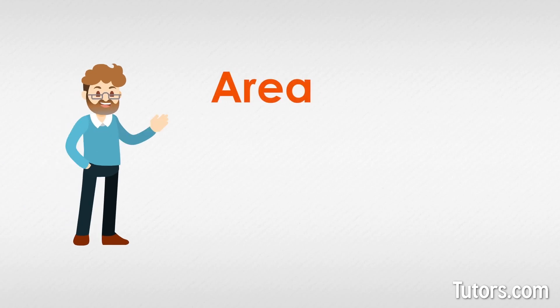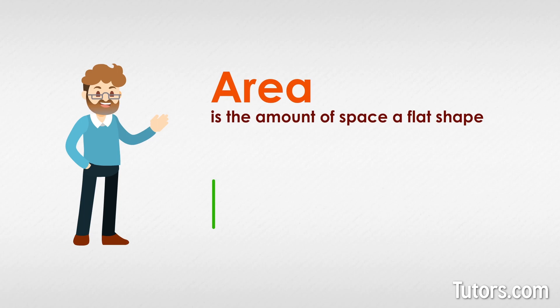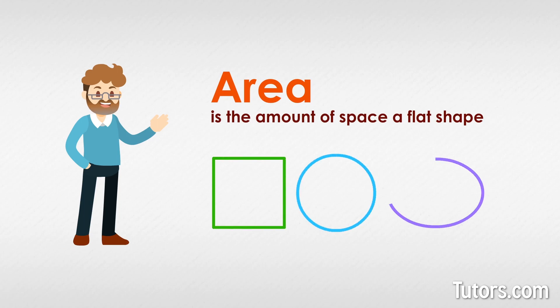In geometry, area is the amount of space a flat shape — figures like a polygon, circle, or ellipse — takes up on a plane.